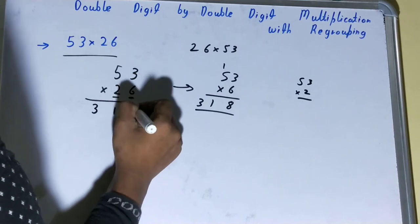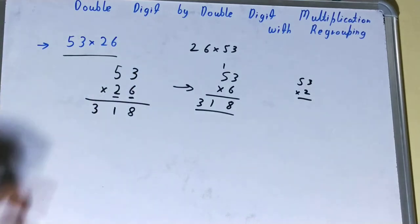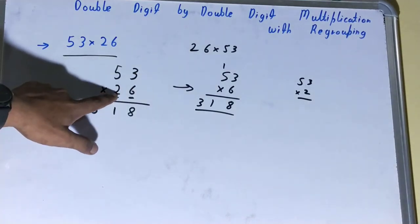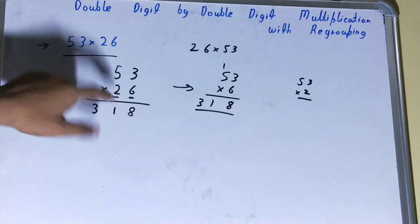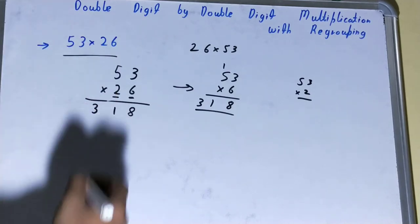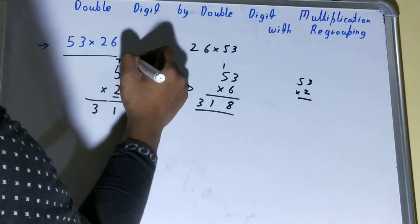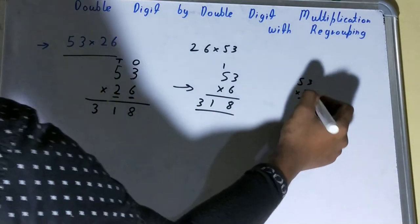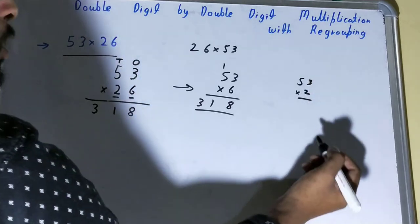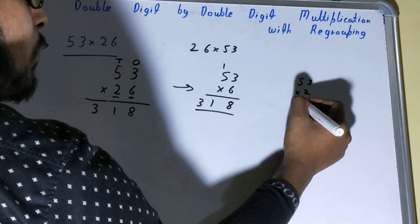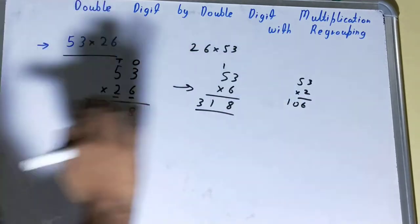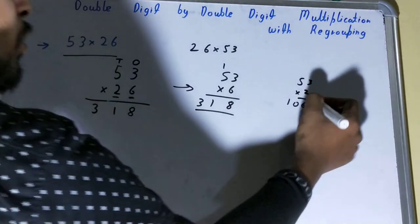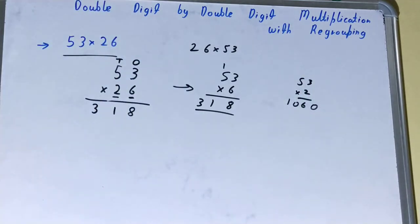Now you need to multiply the tens digit, that is 2. 2 is located at the tenth place of the number. Because it is located at the tenth place, whatever result we get, like 53 into 2 is 106, whatever result we get we'll put an extra 0 to it. So it's 1060.